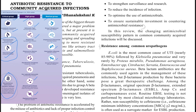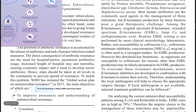In your introduction you need to write that this is a global threat, that many community acquired organisms are having antibiotic resistance, and that WHO has come up with a bacterial priority pathogen list in critical, high risk, and medium groups where many of the organisms are community acquired. Then you can start describing these organisms one by one. You can also talk about the global action plan for antimicrobial resistance.